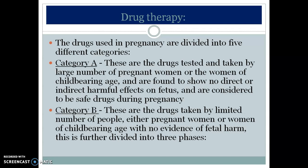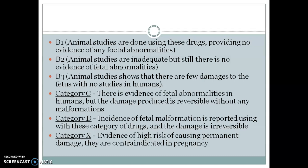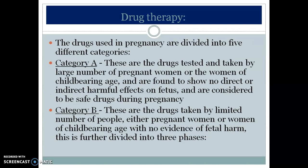Drugs used in pregnancy are divided into five categories: Category A, Category B (subdivided into B1, B2, B3), Category C, Category D, and Category X. Category A drugs are those tested in large numbers of pregnant women or women of childbearing age and found to show no direct or indirect harmful effects on the fetus, and are considered safe during pregnancy.